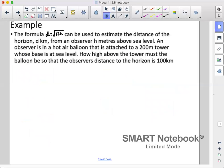Next example. This one's a word question. The formula d equals square root of 13h can be used to estimate the distance of the horizon d kilometers from an observer h meters above sea level. An observer is in a hot air balloon that is attached to a 200 meter tower whose base is at sea level. How high above the tower must the balloon be so that the observer's distance to the horizon is 100 kilometers.